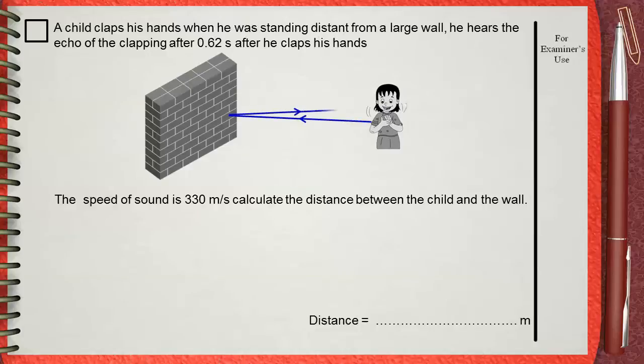This journey made by sound in 0.62 seconds. This means that sound travels from the boy to the wall in one half of this value, which is 0.62 divided by 2, which is 0.31 seconds.